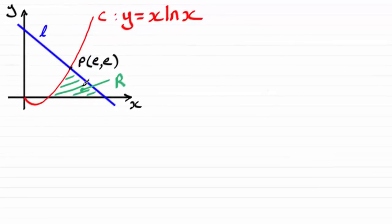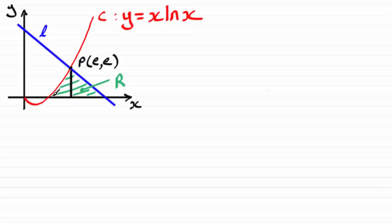For this question we've got to find the area R bounded by the curve C, the x-axis and the line L. The method is to first split this area R into two sections by drawing a line down from P to the x-axis. We're going to work out the area of this first section where the curve crosses the x-axis. We'll need to find this coordinate here later on — I'm going to call it A.